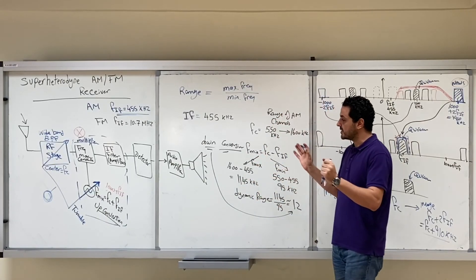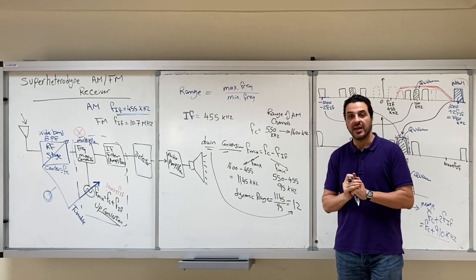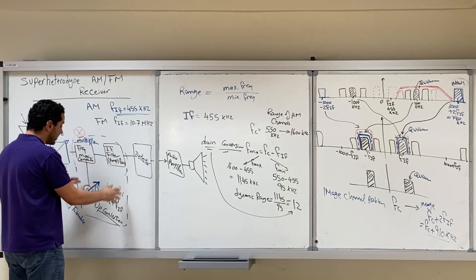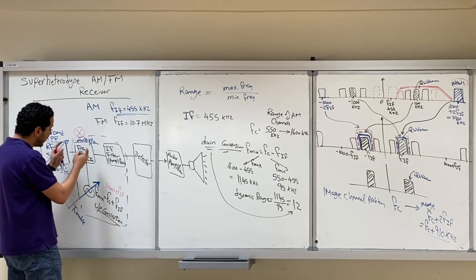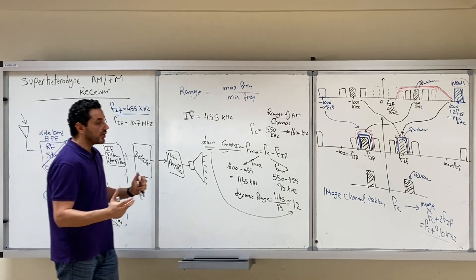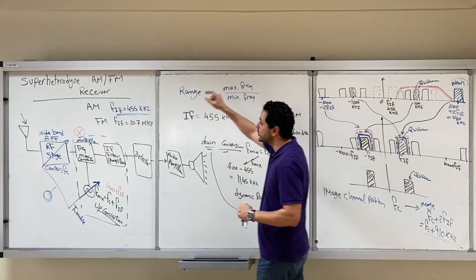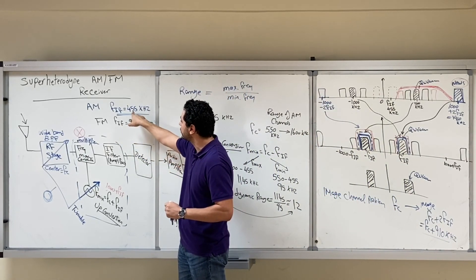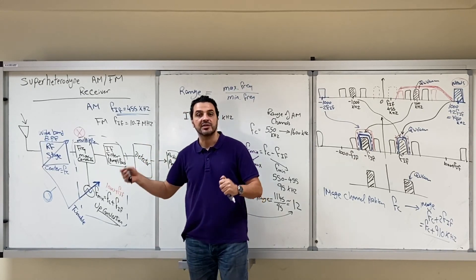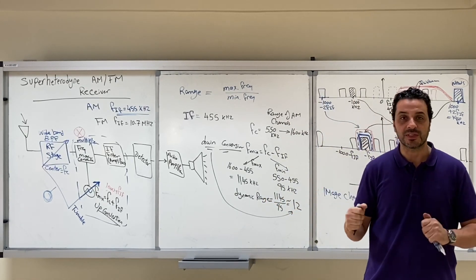I hope that was clear. Keep in mind that the three blocks — the oscillator, the multiplier, and the filter — together constitute the mixer, but in the textbook the author separated the filter and oscillator from the mixer block just to make it clear. That's it for the superheterodyne AM/FM receiver. The same receiver is used for FM, except FIF is 10.7 MHz instead of 455 kHz, and the detector used is an FM demodulator rather than an AM detector. We'll see you in the next video.